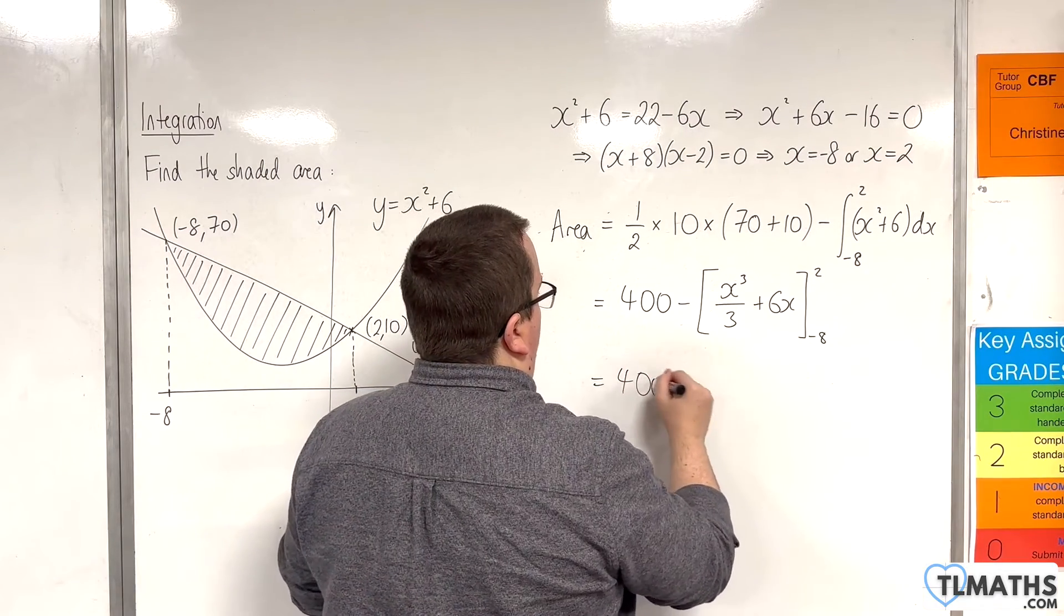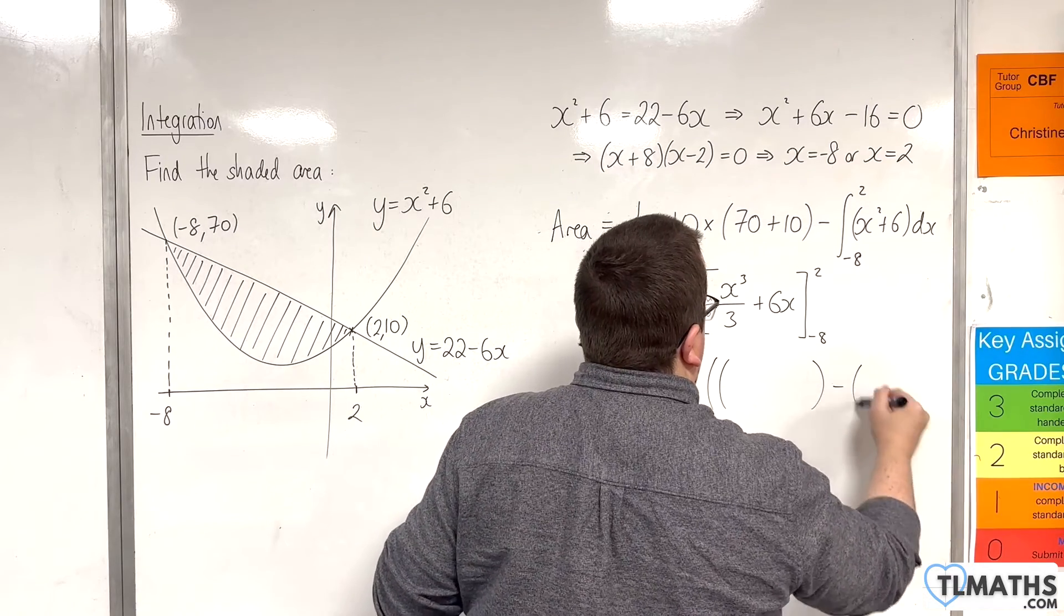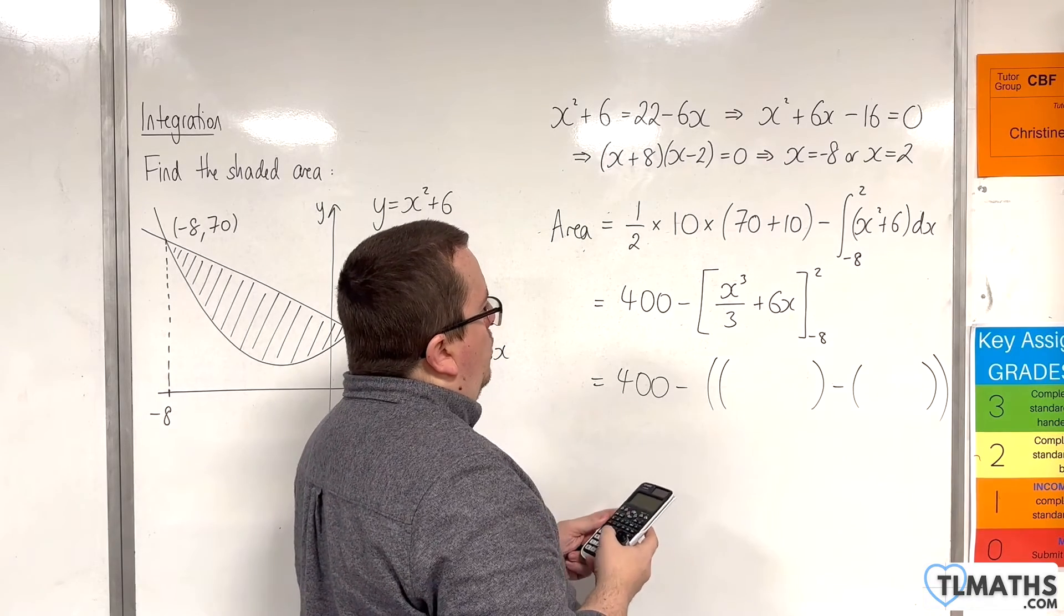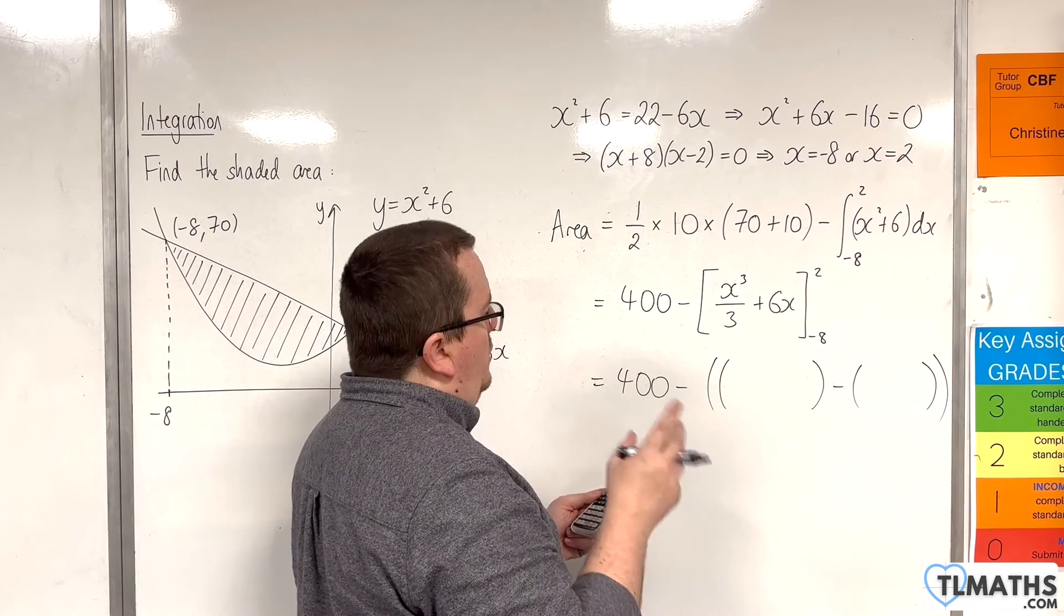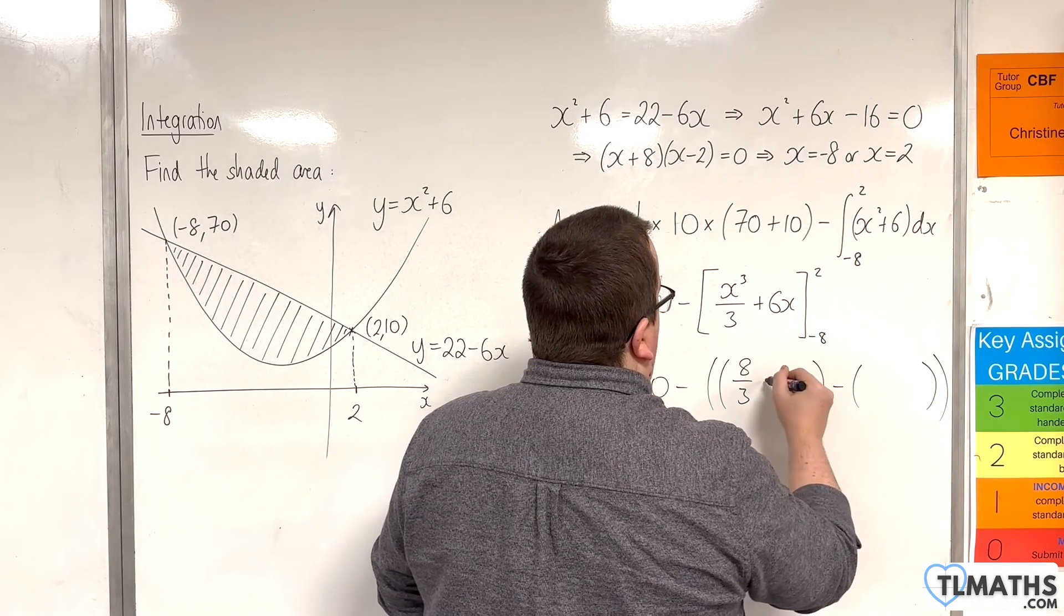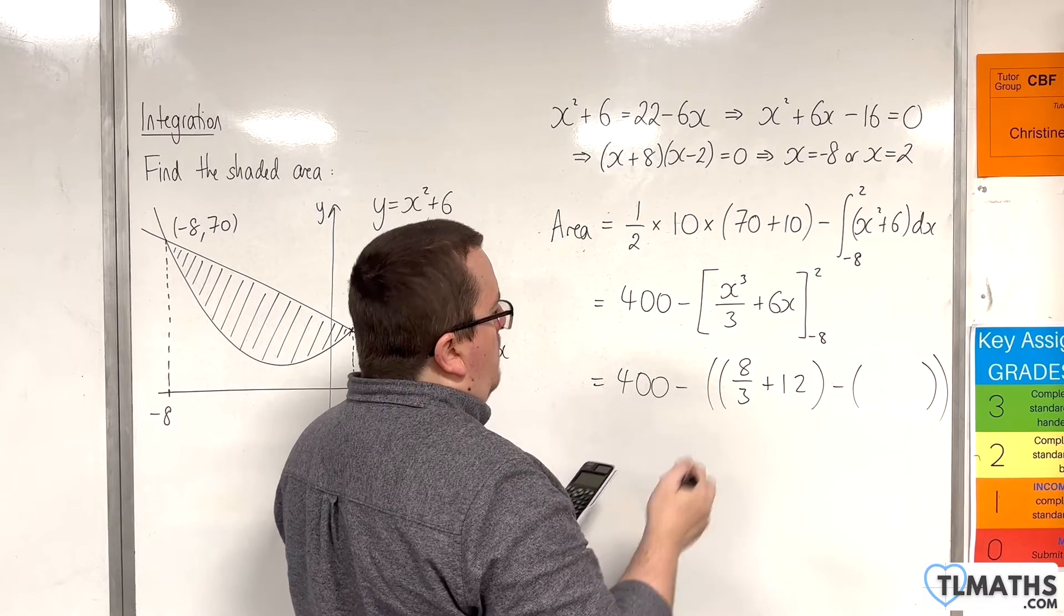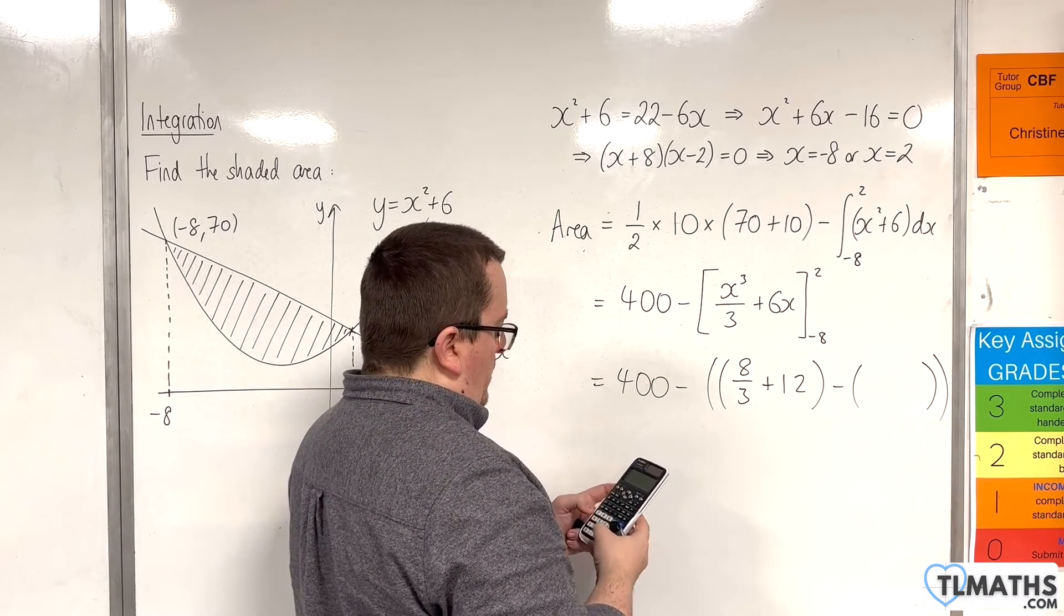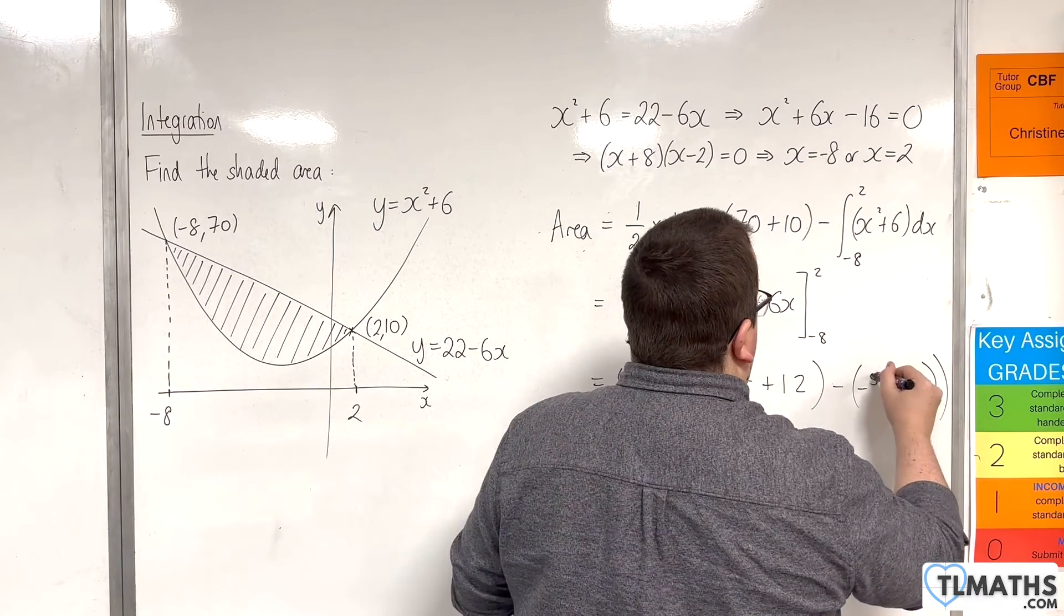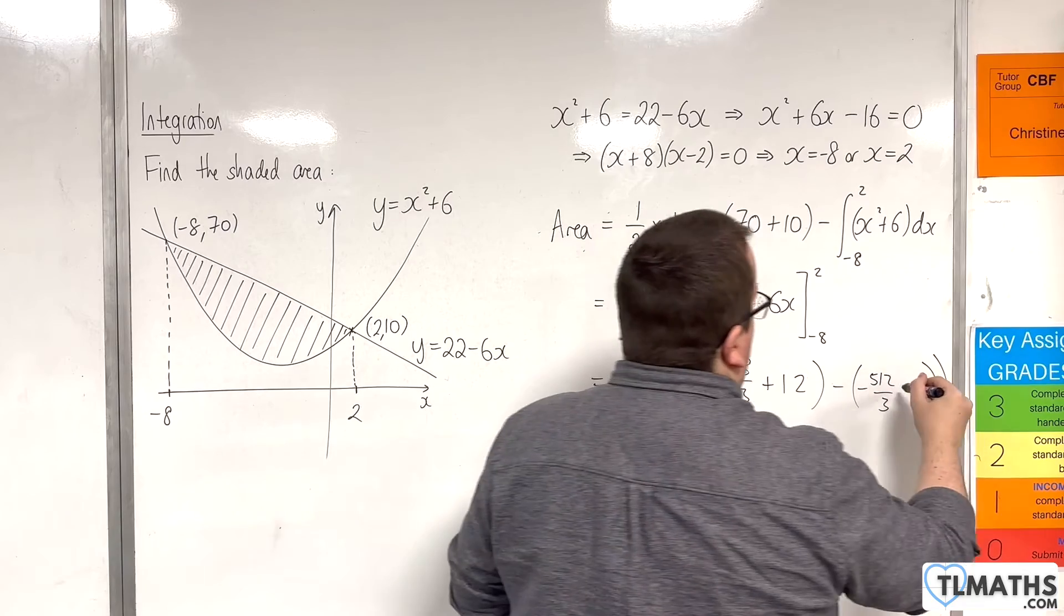So, 400, take away, now open up a large bracket. So, I'm going to take away 2 pieces here. Okay, so we have substitute in the 2, so we're going to get 8 thirds plus 12, and then substitute in the minus 8, so that's going to be minus 512 over 3, and then take away 48.